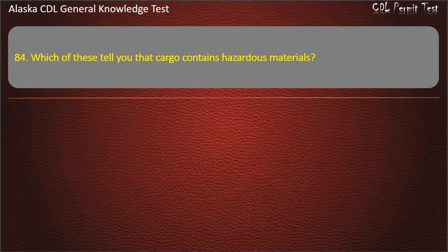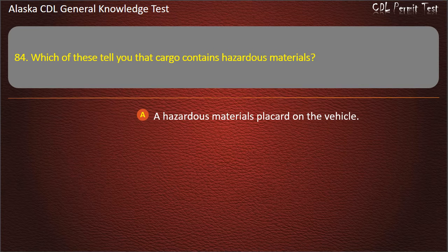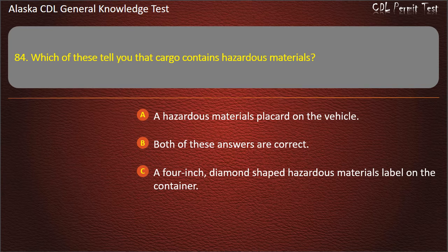Question 84. Which of these tell you that cargo contains hazardous materials? A hazardous materials placard on the vehicle, both of these answers are correct, or a 4-inch diamond-shaped hazardous materials label on the container. Answer: Both of these answers are correct.